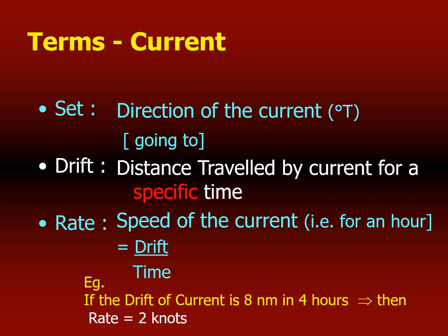For example, if the drift of the current is 8 nautical miles and this has happened over a period of 4 hours, then 8 divided by 4 gives you the rate or speed of the current, which is 2 knots. Alternatively, if the rate of the current is 2 knots, then in 4 hours the vessel will have drifted a distance of 2 multiplied by 4, which is 8 nautical miles.